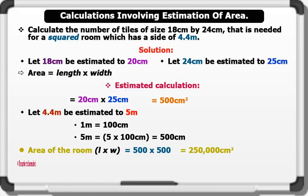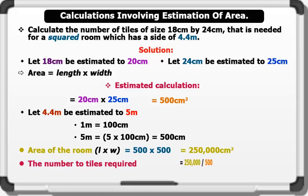The number of tiles required equals area of the room divided by area of the tiles. This gives us 250,000 divided by 500, which equals 500 tiles.